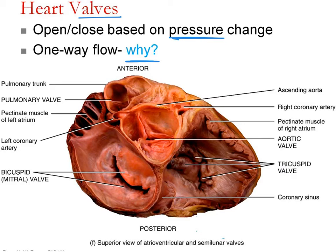We don't want blood to come back up from the right ventricle into the right atrium — that's backflow. We want blood to move into the ventricle because from the right ventricle we're trying to get to the lungs to pick up oxygen. When the ventricle contracts and pressure in the right ventricle becomes higher than the pressure in the pulmonary trunk, the pulmonary valve opens and blood shoots out into the pulmonary arteries to go to the lungs.